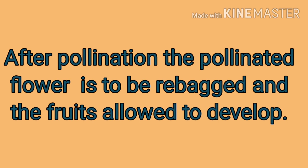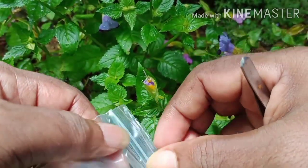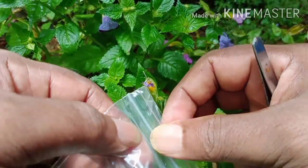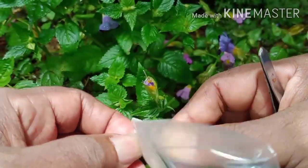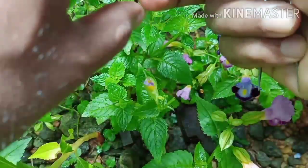After artificial pollination, re-bagging is done on the flower in the session. The process is then complete.